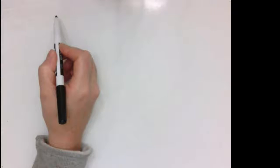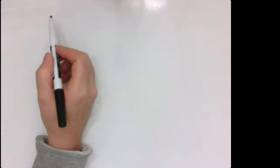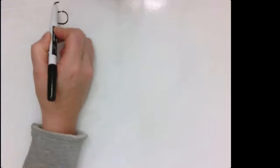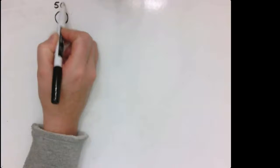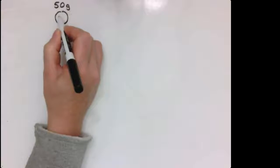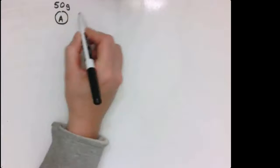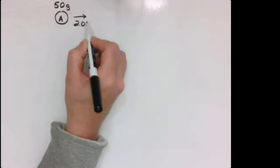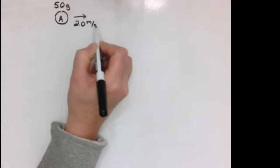The very first thing we want to do is change the representation — we're just going to draw a sketch instead of looking at all those words. So we have a 50 gram marble; we'll call this marble A, and the 50 gram marble is moving at 2 meters per second.